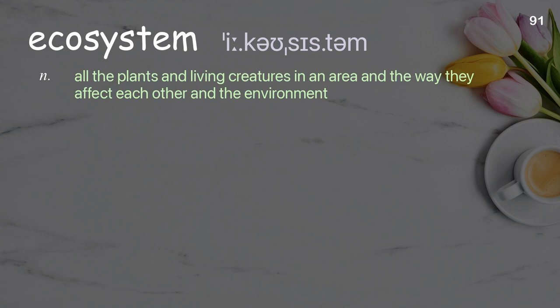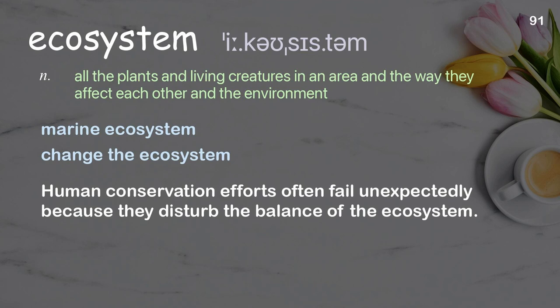Ecosystem: all the plants and living creatures in an area and the way they affect each other and the environment. Examples: marine ecosystem; change the ecosystem; human conservation efforts often fail unexpectedly because they disturb the balance of the ecosystem.